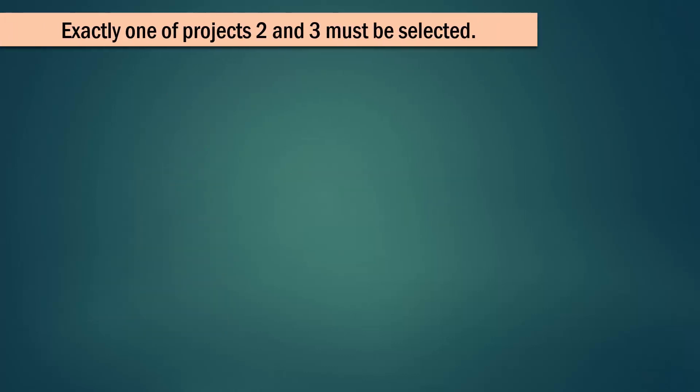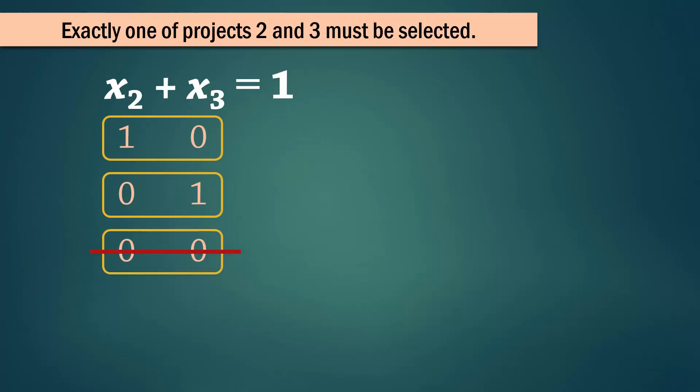Next, exactly one of projects 2 and 3 must be selected. This is actually a mutually exclusive case in which we are forced to choose one of projects 2 and 3. So we write x2 plus x3 equals 1. That is, we can have only project 2, or only project 3. We can't have neither, and we can't have both. This is often referred to as a multiple choice constraint. You can think of it as a true or false question that you must answer before you proceed with the rest of an exam.